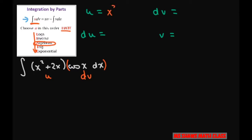x squared plus 2x is the algebraic part, and then everything else, the trig part, is going to be dv. So that's cosine x dx.